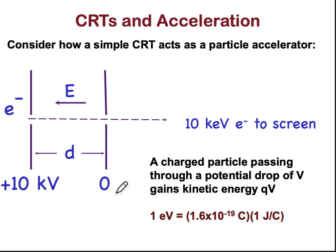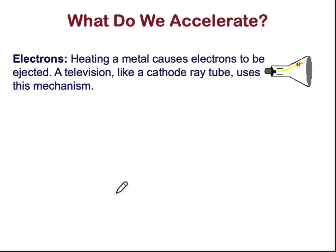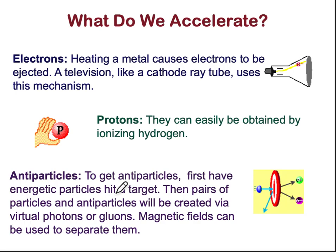What do we actually accelerate? We can accelerate electrons and protons and their antiparticles. Electrons are accelerated in a cathode ray tube — a best example of how electrons gain acceleration traveling from cathode to anode. Protons can easily be obtained by ionizing hydrogen. Antiparticles are a little more difficult — you first energize particles and hit a target; the resulting particles and antiparticles are created as virtual photons and gluons, and by applying magnetic and electric fields you can separate and accelerate them.